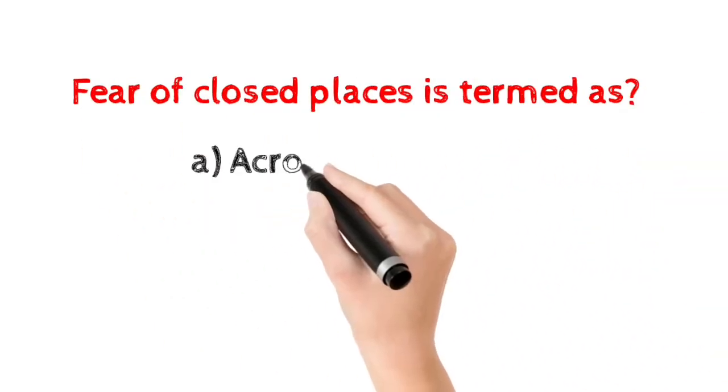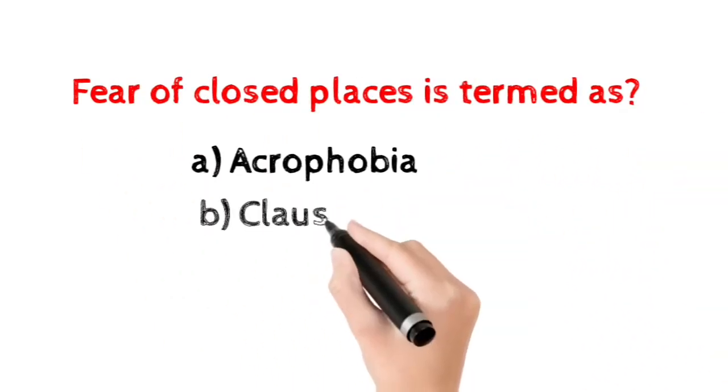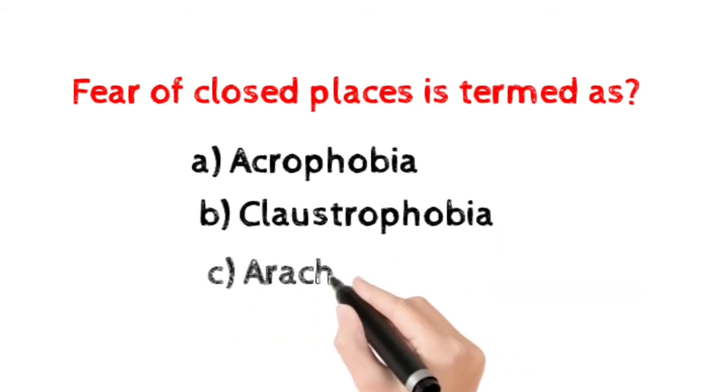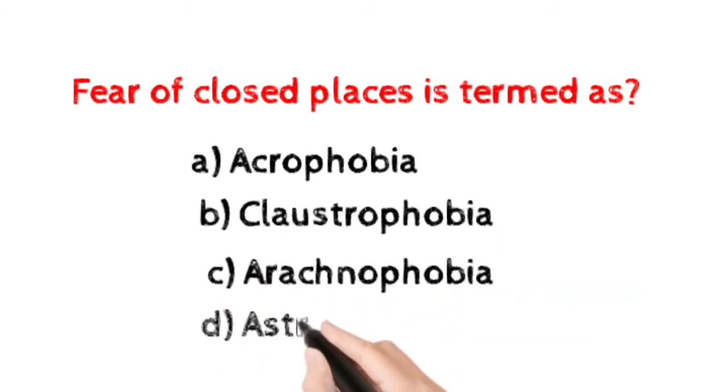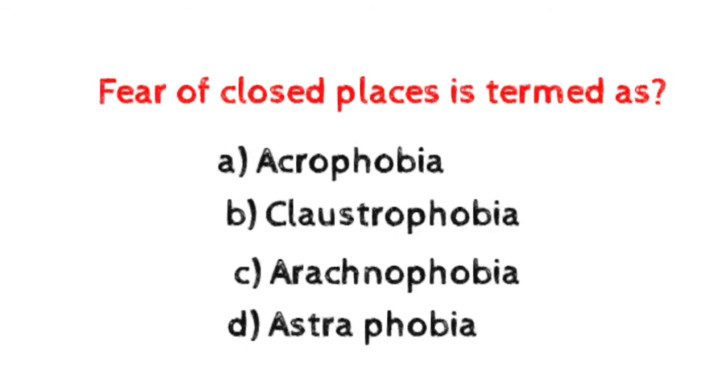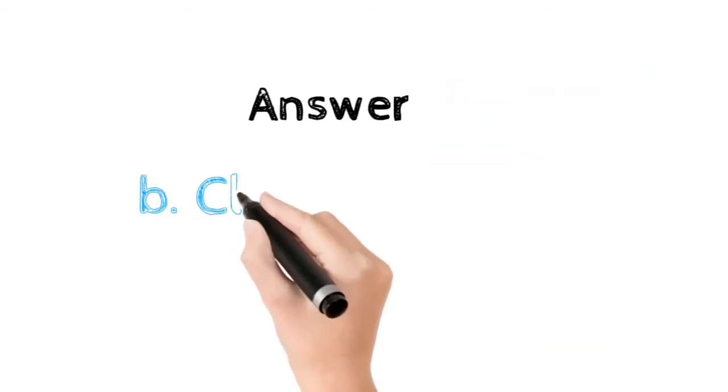Number five: Fear of confined spaces is called? Option A: acrophobia. Option B: claustrophobia. Option C: arachnophobia. Option D: astrophobia. Here the correct answer is claustrophobia.